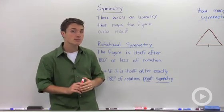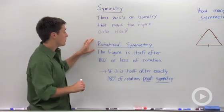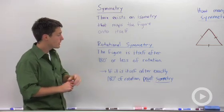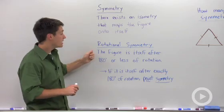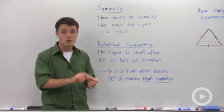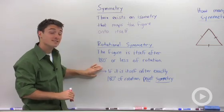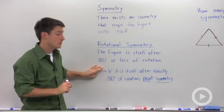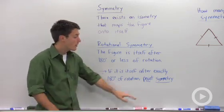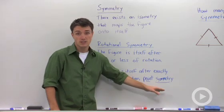We can be more specific, however, for certain objects and say that they have rotational symmetry. An object has rotational symmetry if that figure is itself after you rotate it less than 180 degrees. If it is itself after exactly 180 degrees, no more, no less, then that figure has point symmetry.